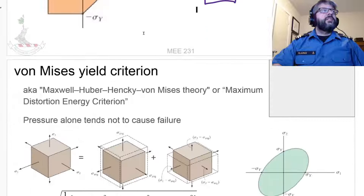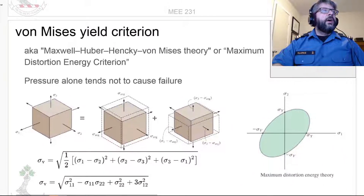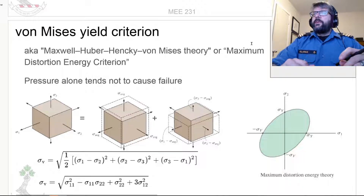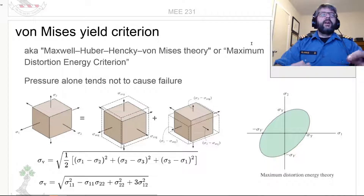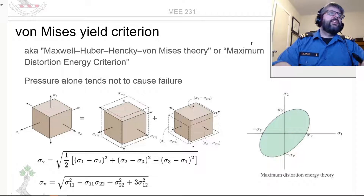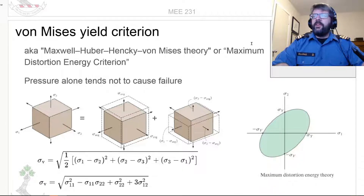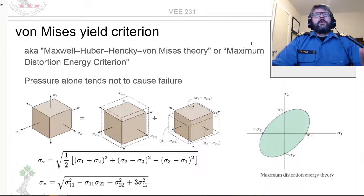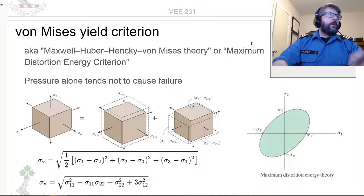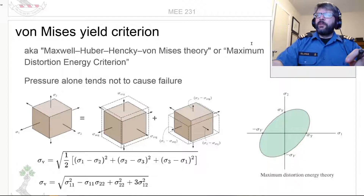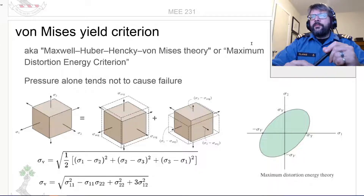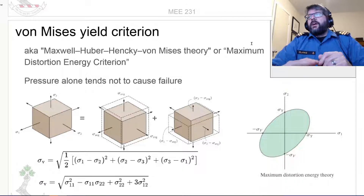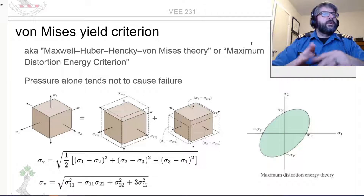The next one is the Von Mises yield criterion, also known as the Maxwell-Huber-Hencky-Von Mises theory. A lot of people contributed to this theory at various points without necessarily collaborating. Almost everyone refers to it simply as the Von Mises yield criterion — if you say Von Mises, people know what you're talking about. Don't worry about hurting their feelings, because they've all been dead for quite some time.